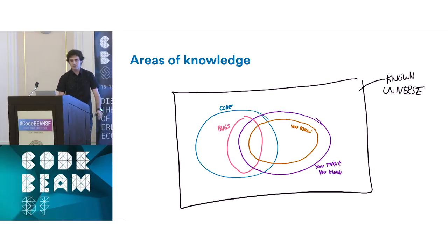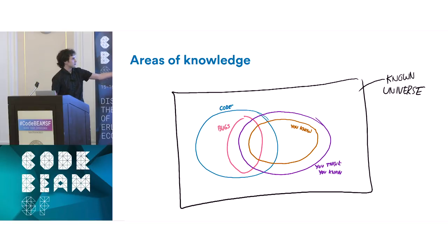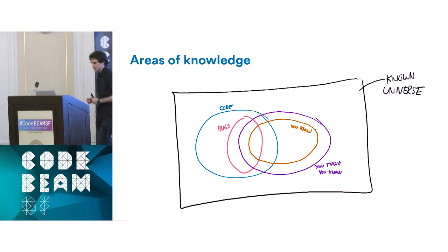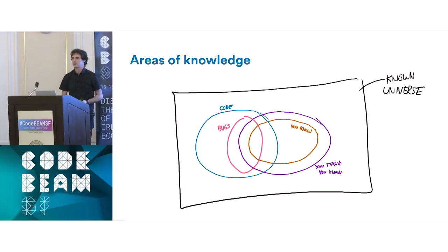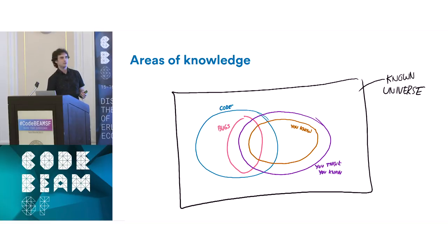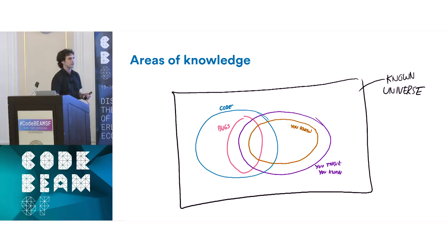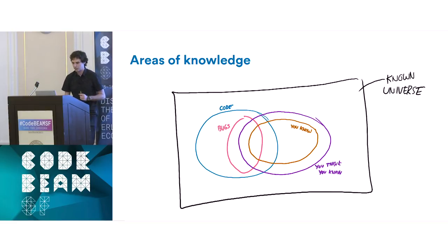The way I want to start is about the areas of knowledge we have in a system. There is this brown-orange circle that is the things we know — not that big in the grand scheme of things. Most of the code that we run and are responsible for is not code we have written. We're also answering for bugs in the OS we deploy to, hypervisors and services we haven't written — but if there's a bug in there, you're still the point of contact.